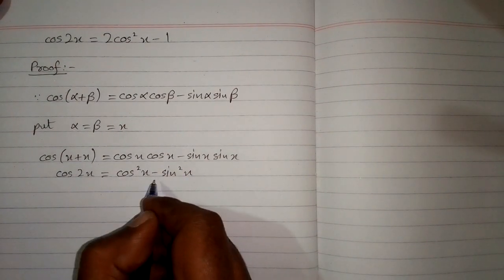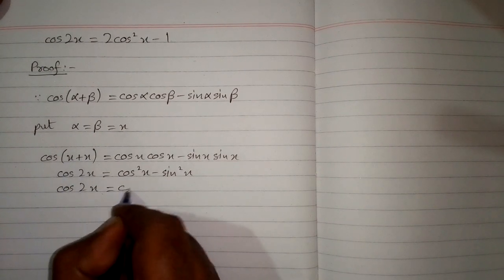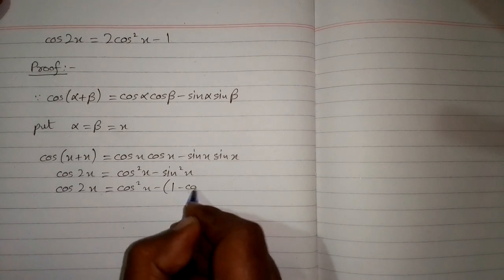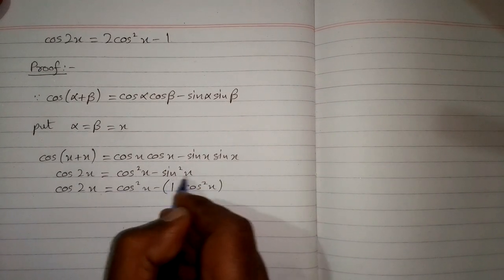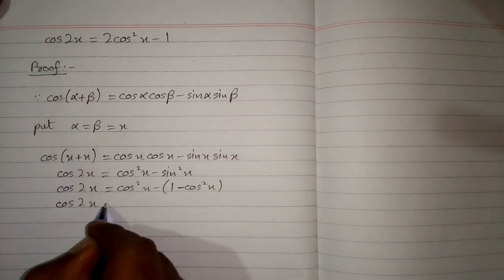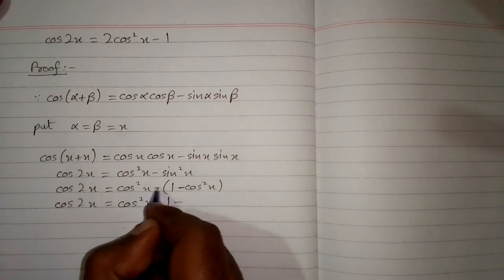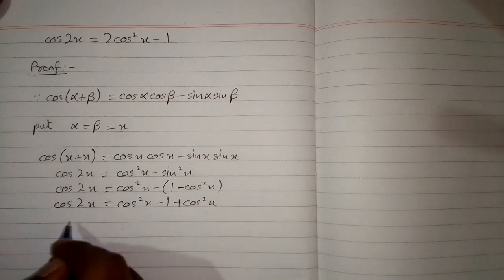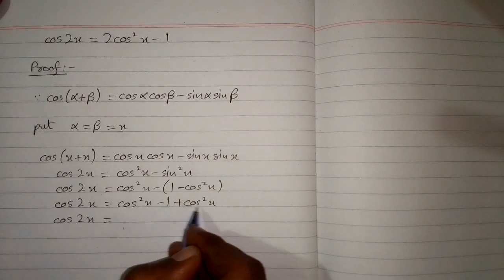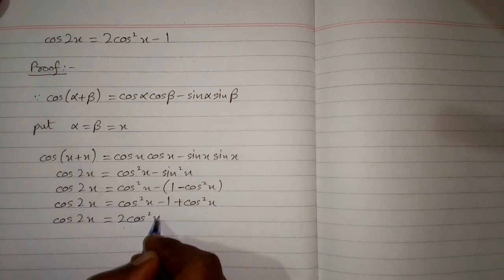So cos 2x is equal to cos squared x minus sin squared x. Now we substitute 1 minus cos squared x in place of sin squared x. So we have cos 2x equal to cos squared x minus 1 plus cos squared x, which gives us cos 2x equal to 2 cos squared x minus 1.